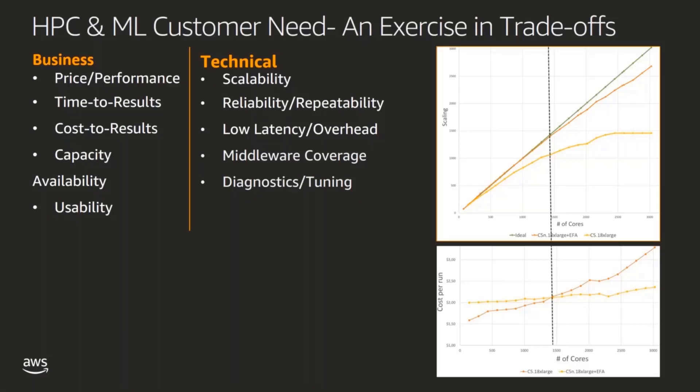But cost to results is not necessarily the only metric to consider, and usually price performance trumps all metrics. There is no one-size-fits-all, and more often than not, these business and technical metrics are subjective and time-variant and project-variant. There is usually always a trade-off between competing priorities, and that's what AWS tries to do — provide you the flexibility and choice in making those decisions.